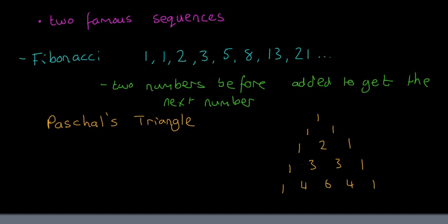So then 1 plus 3 is 4, 3 plus 3 is 6, and 3 plus 1 is 4. So the numbers in the middle here are always the sum of the two numbers in front of them.